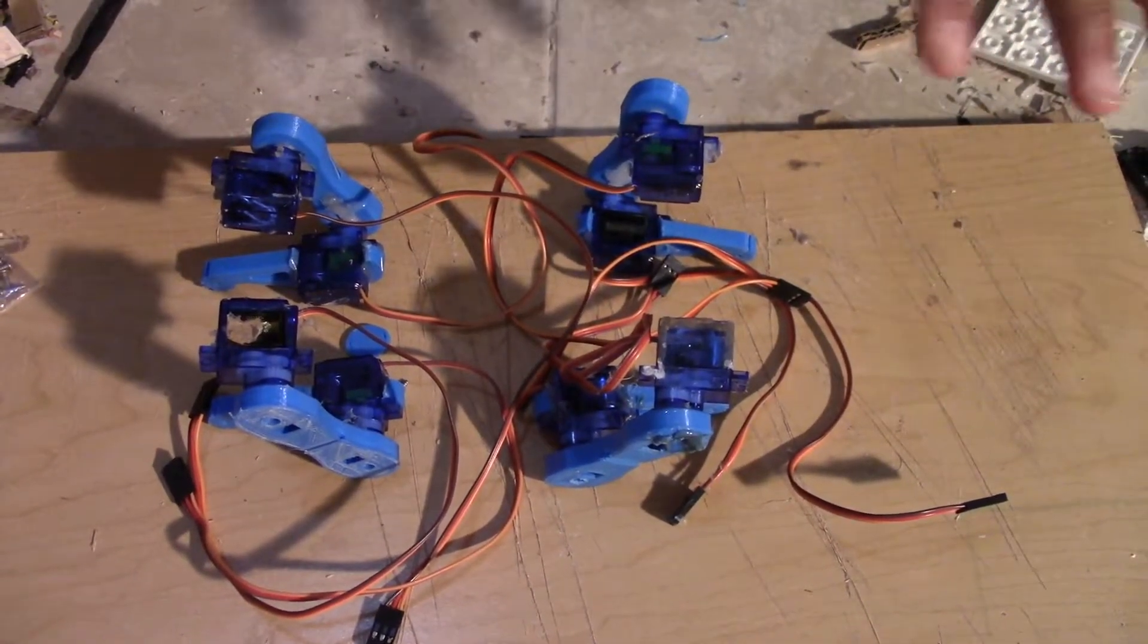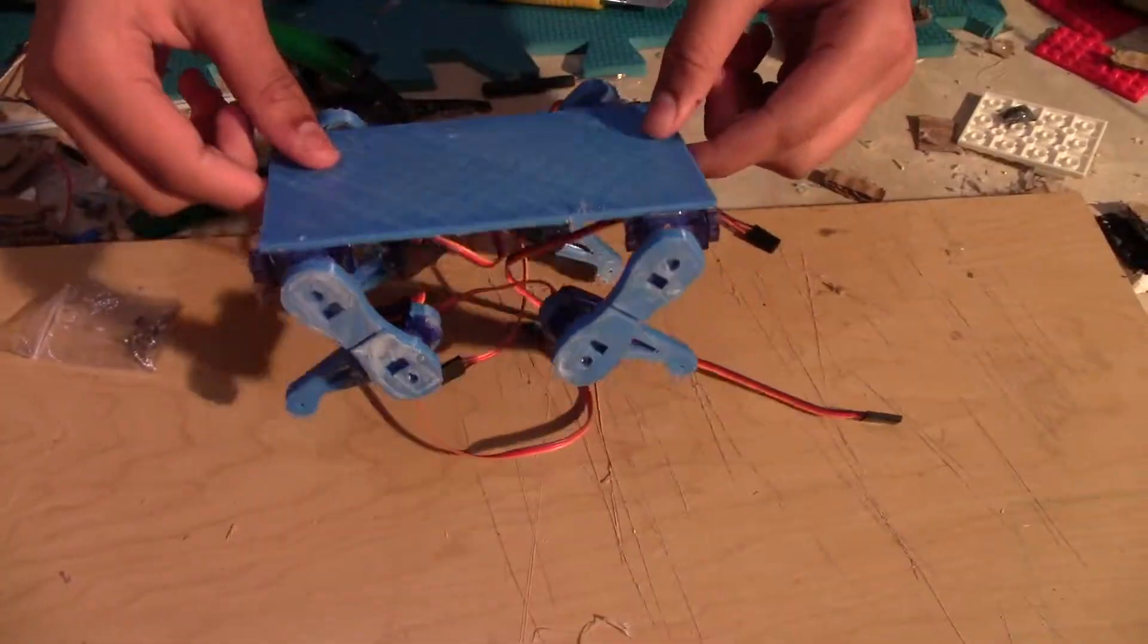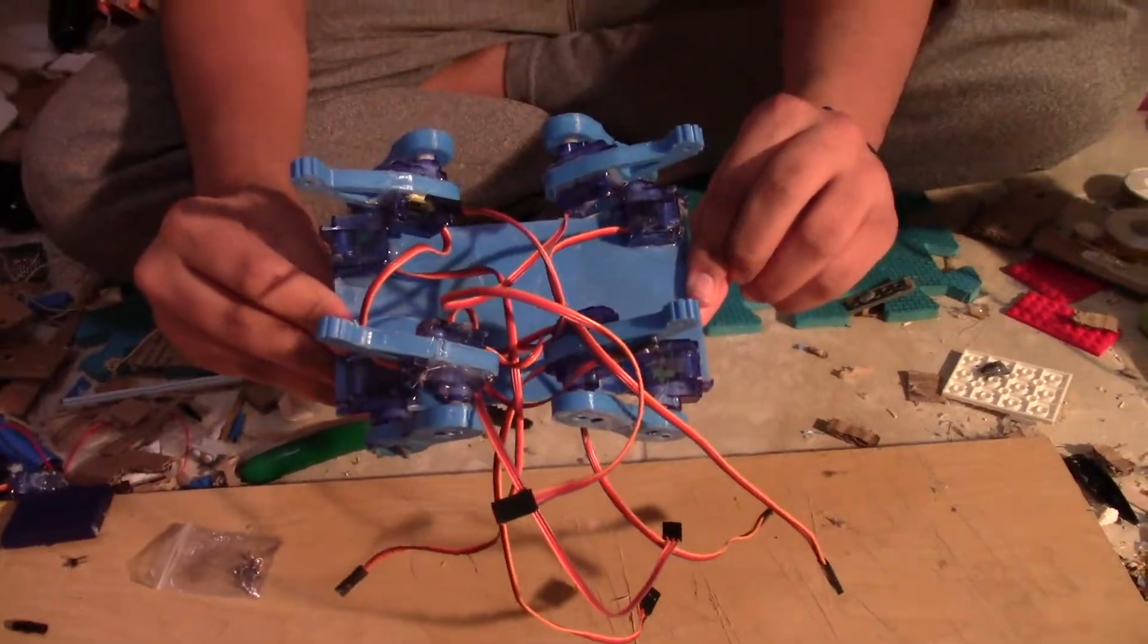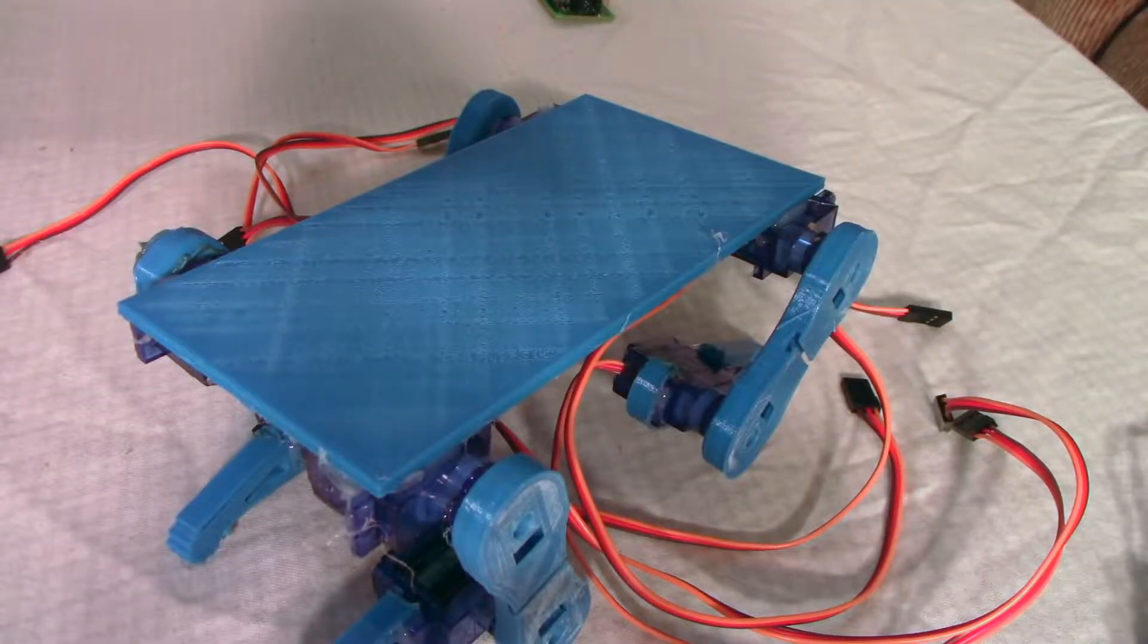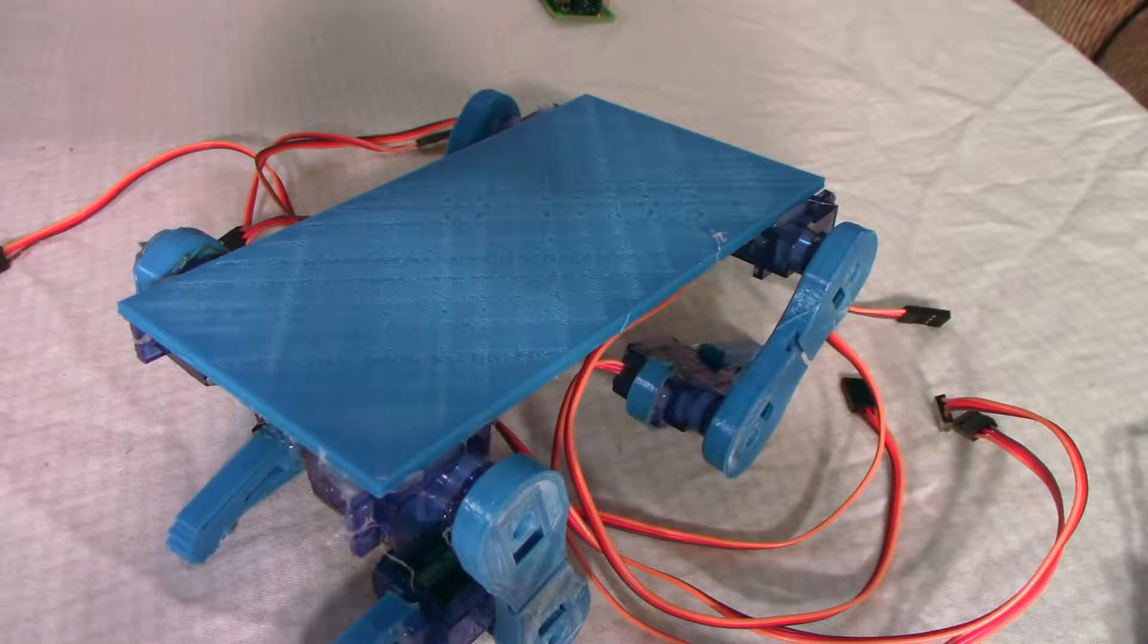So the next step is to arrange all the servos like this, put some glue on top of all the sides, and here we have everything glued on. Before we move on with the video, I want to tell you guys subscribe to Darkstone. Darkstone's channel is linked in the description below, so go check it out and also subscribe to him.